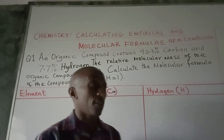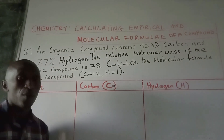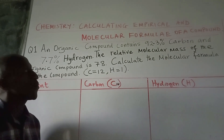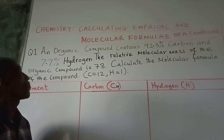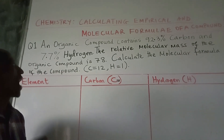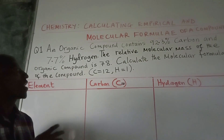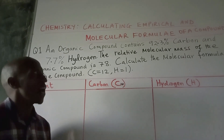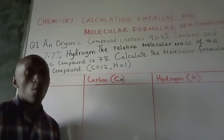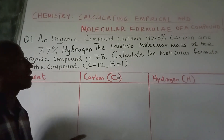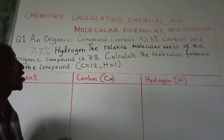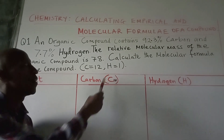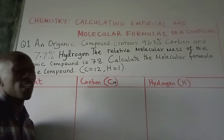Question number one reads that an organic compound — a compound made up of two elements, carbon and hydrogen — contains 92.3% carbon and 7.7% hydrogen. The relative molecular mass of the organic compound is 78; that is the RMM, the mass of one molecule of that compound. Calculate the molecular formula of the compound, given that the atomic mass of carbon is 12 and the atomic mass of hydrogen is 1.